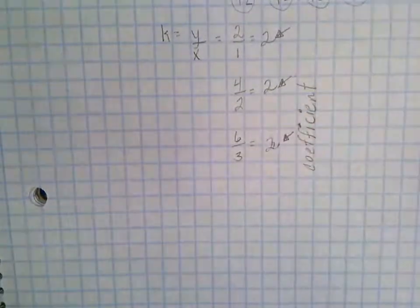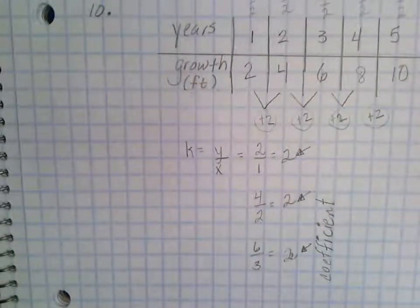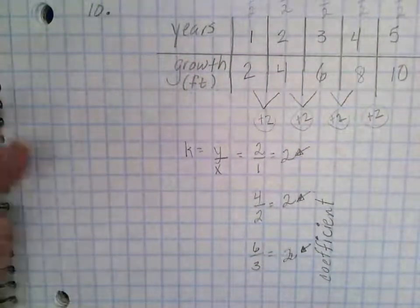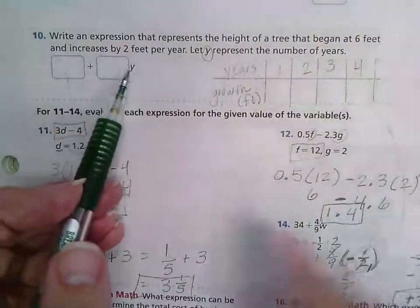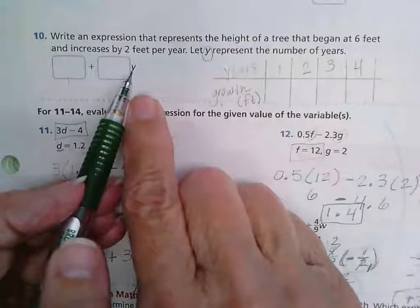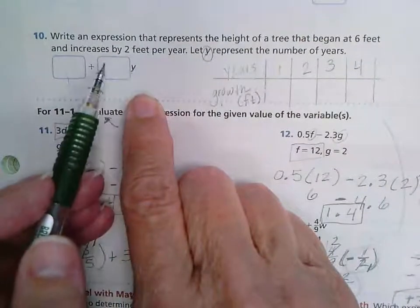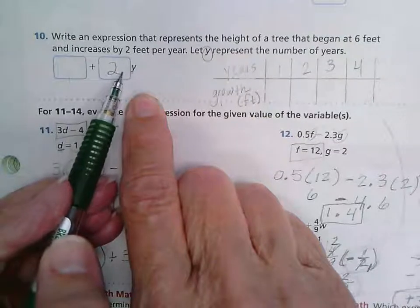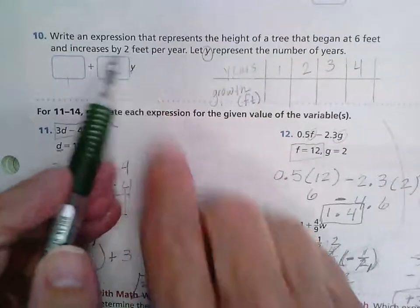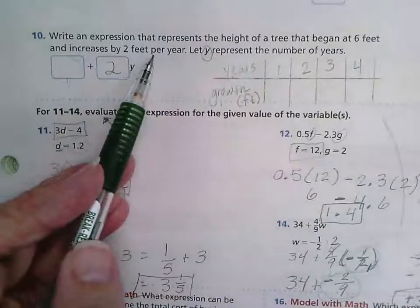Two is my coefficient. So that means in my expression, in my book here, is my variable y which represents my number of years. So I can put my two right here. It's increasing by two feet every single year.